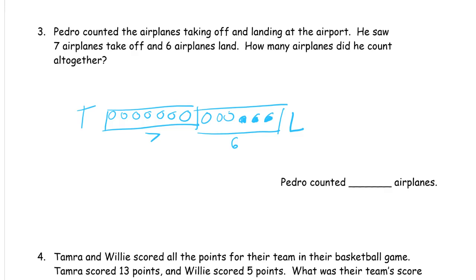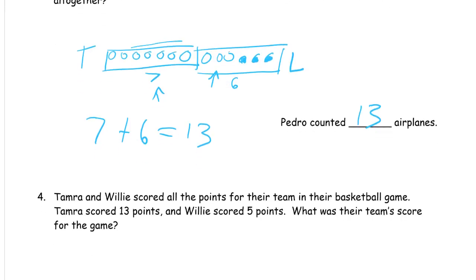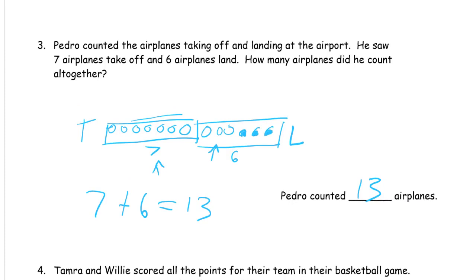But I just did this because I know that 7, this 7, and those 3 will make a 10. So, I can see 10 and 3 more. But if you just write this 7 plus 6 equals 13, Pedro counted 13 airplanes. You've got everything you need. You've got to have those labels. One more. From end to end, when you put them together, it's 13 in the picture.